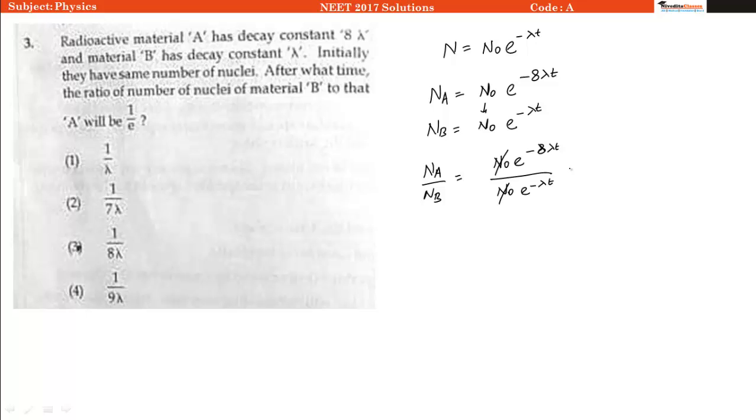Here N naught gets cancelled out and we are left with e raise to power minus 7 lambda t, which should equal 1 by e.